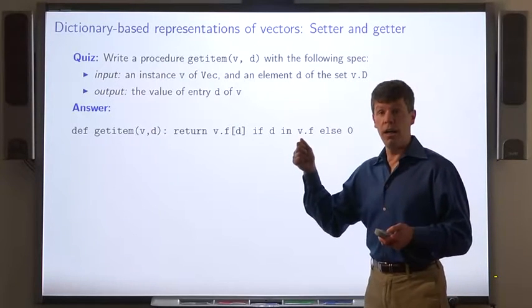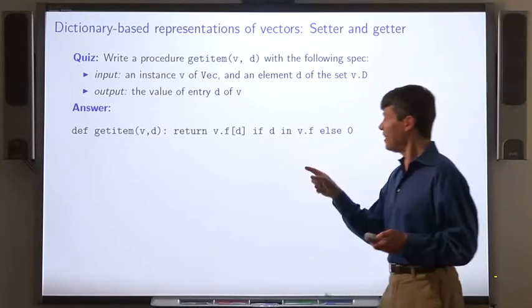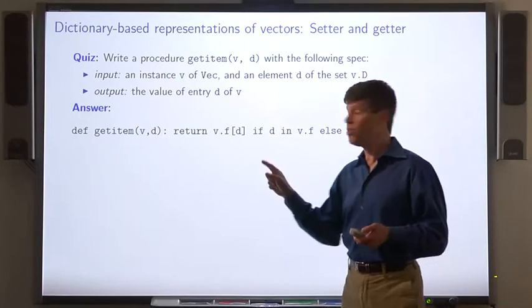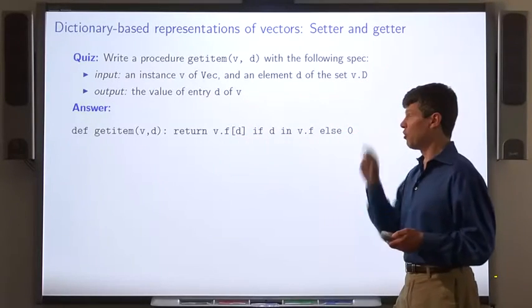If the domain element D is one of the keys of the dictionary, V dot F, then the procedure returns the corresponding value. And if not, return 0.